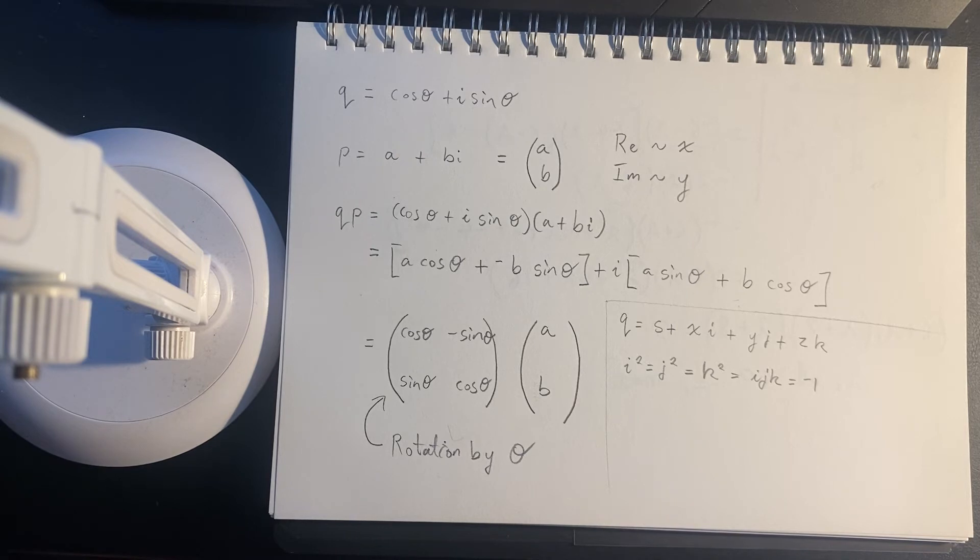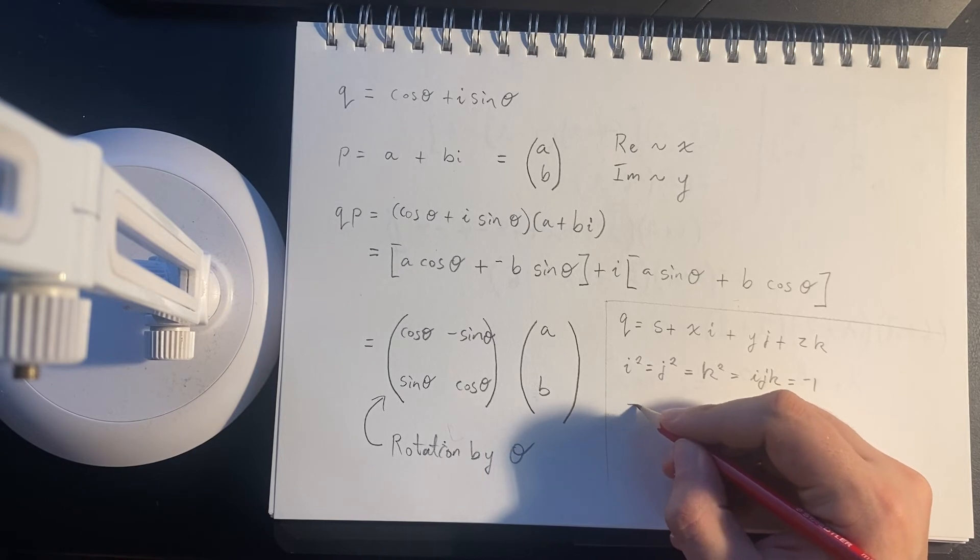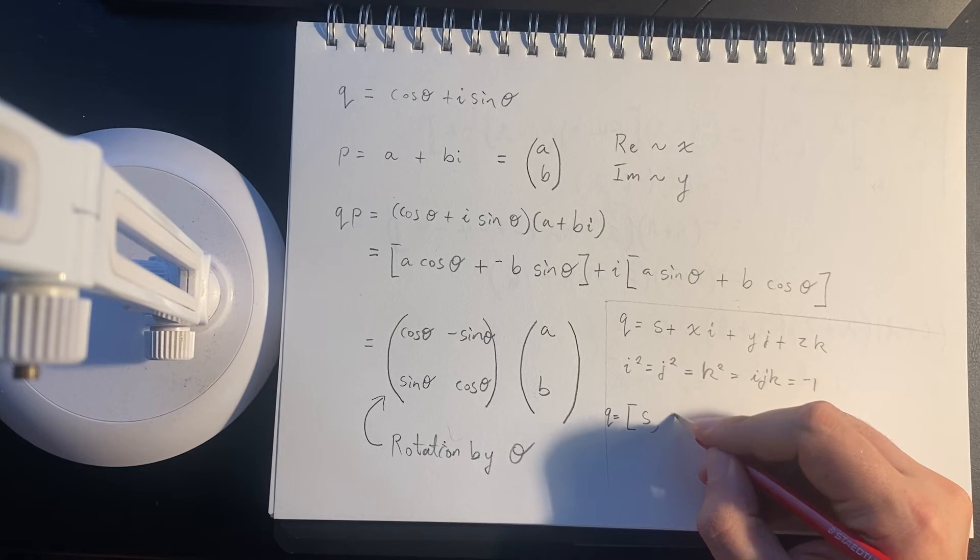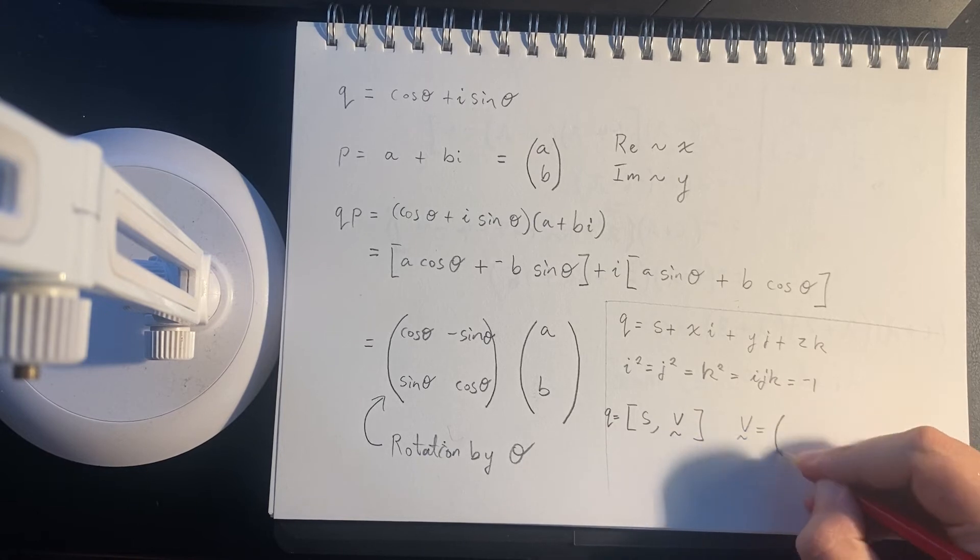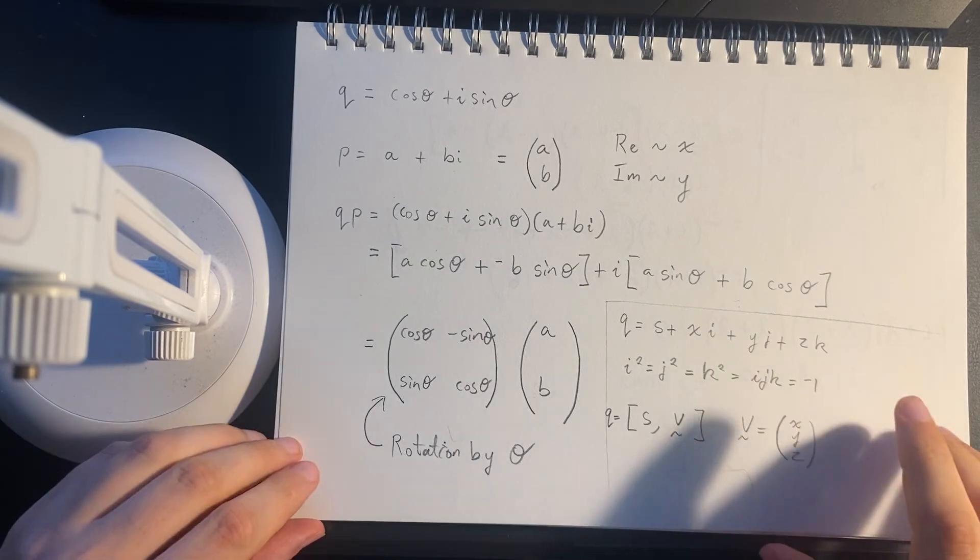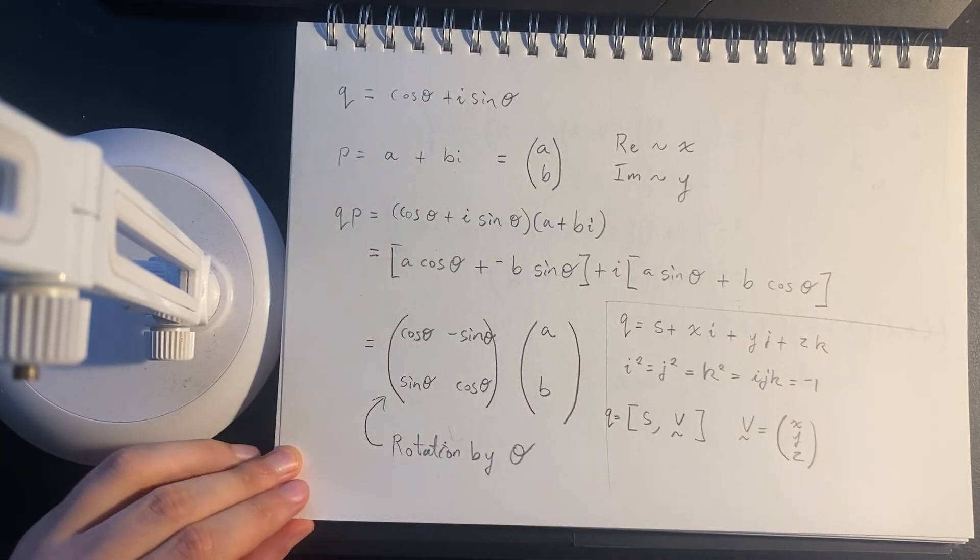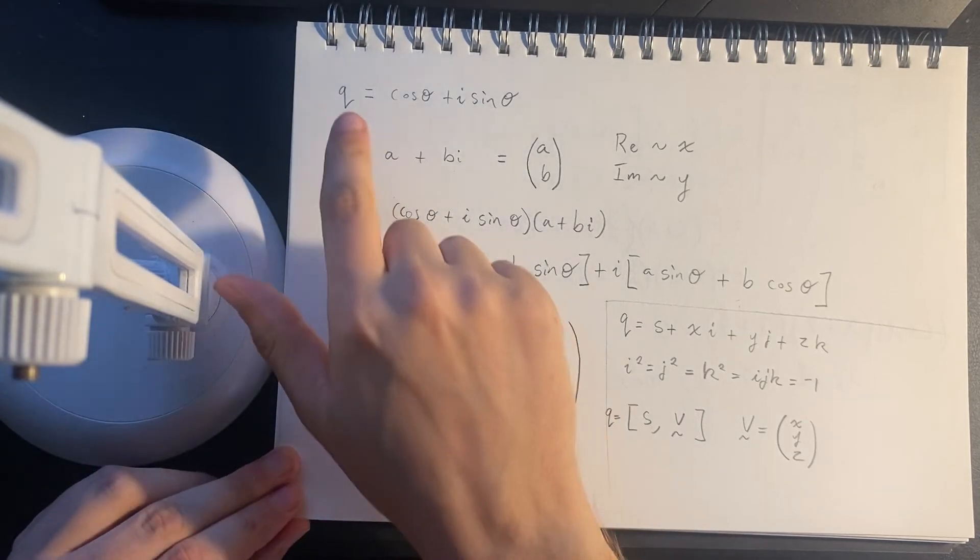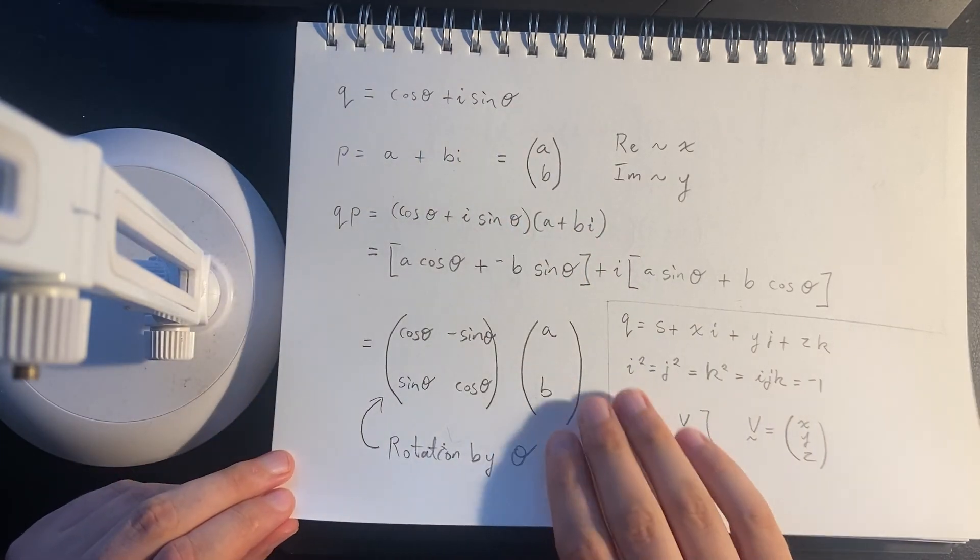So those are what we're working with. It might be useful to represent this as an ordered pair. So we could say, okay, we have a real part and then some sort of vector, where that vector is storing the x, y, z components. All right. So that being the case, the next question is, what is the quaternion equivalent of this rotation structure here?